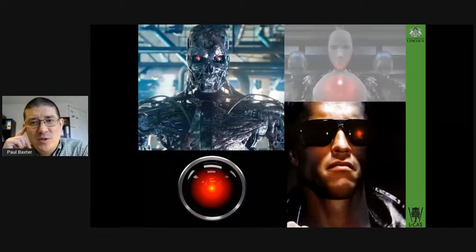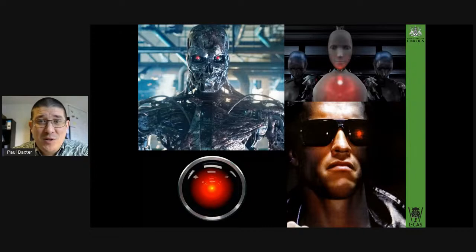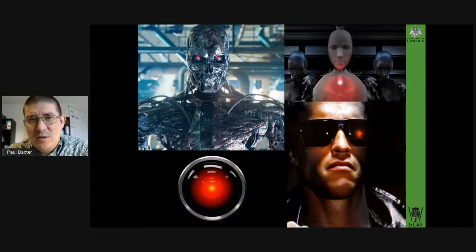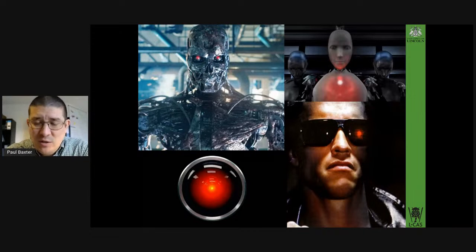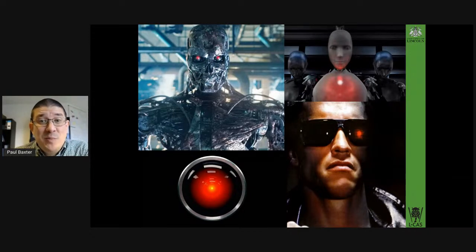Of course, one of the most prevalent genres of robots in films is the evil robots — the ones that take over the world, the ones that kill people. But even in this case, what you see are entities with really quite high levels of social abilities. HAL, for instance, is capable of natural language interaction to an extent that current systems really struggle with still. These capabilities are used for evil as well as good. Social interaction doesn't necessarily imply good interactions — just because a Terminator is trying to kill you doesn't mean it can't speak to you nicely to begin with.